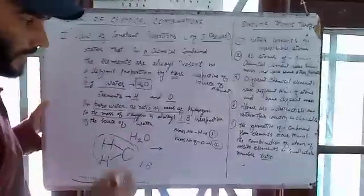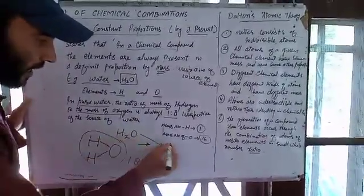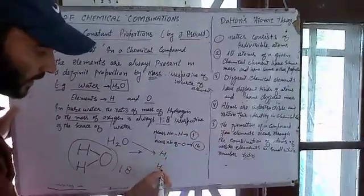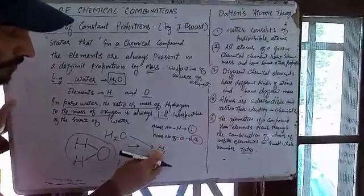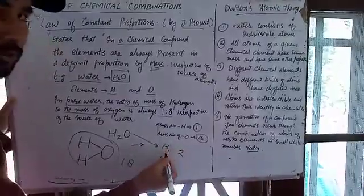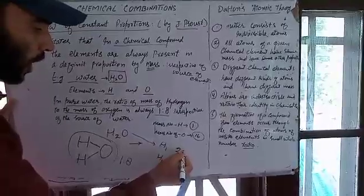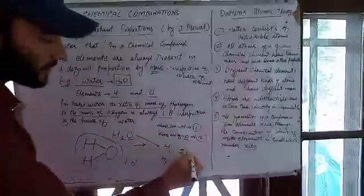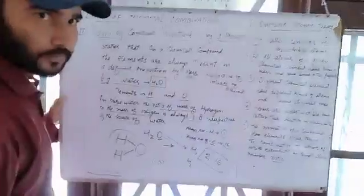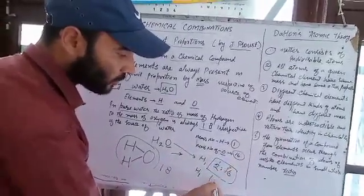In water, there are two hydrogen atoms, each with mass 1, so H₂ has mass 2. Oxygen is a single atom with mass 16. So the actual ratio is 2:16, which simplifies to 1:8.